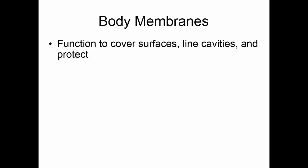So far we've talked about chemicals, cells, and tissues working our way through the organizational levels of life. We're now ready to talk about organs and our first organ system. Body membranes function to cover surfaces, line cavities, and protect underlying structures. Body membranes are simple organs — they're composed of two tissue types. An organ is composed of two or more tissue types that have a similar function.